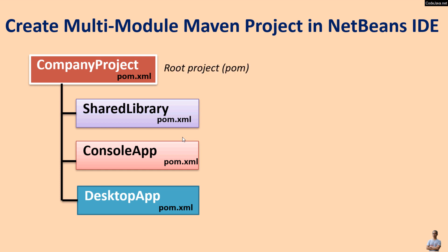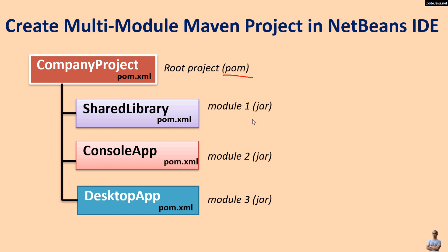This is a very common scenario in software project development. Using Maven, we need to create the root project, and under the root project we create the Maven modules. The first module is for the shared library, the second module is for the console app, and the third module is for the desktop app. Note that the packaging type of the root project is POM, and the packaging type of the three modules can be JAR.